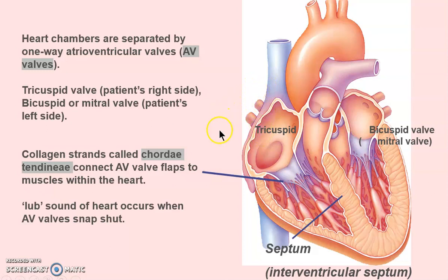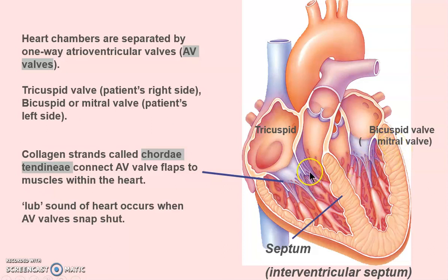Think of your patient laying on the gurney: tricuspid on the right side (patient's right), bicuspid or mitral on the left side. In medicine, you often see the word 'mitral.' The chordae tendineae are the tendons that help pull the valve open. When these AV valves shut, we get a characteristic heart sound.